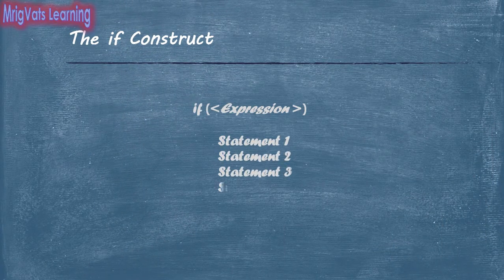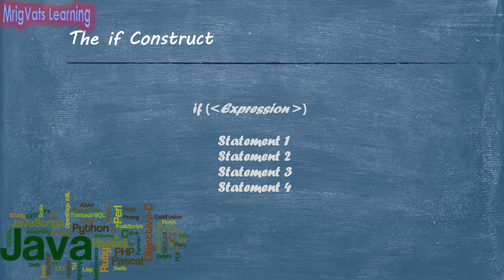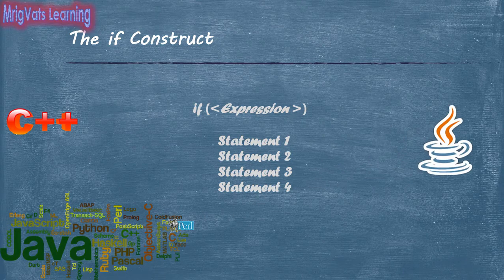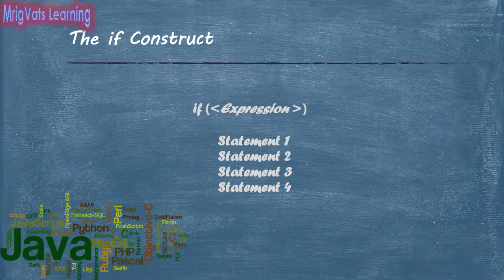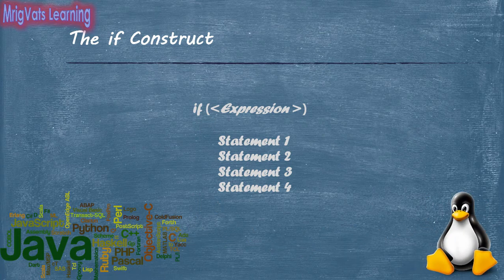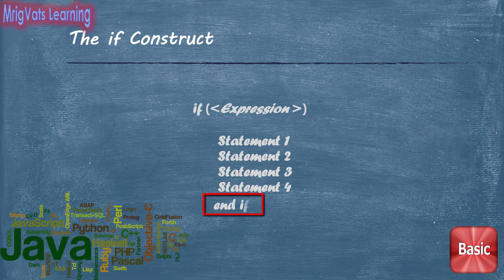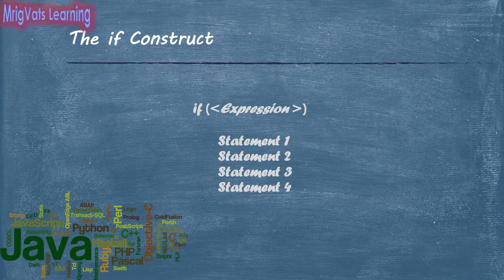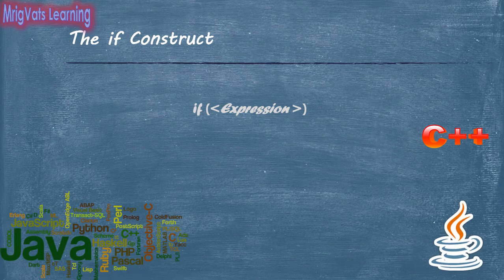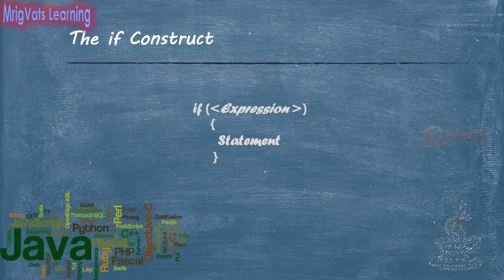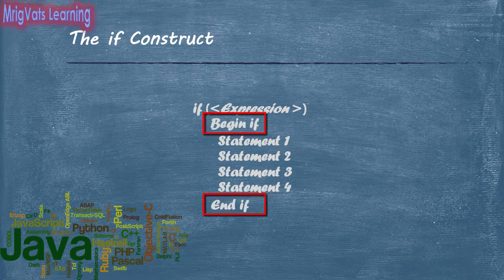The body of the if construct is enclosed within delimiters. Different programming languages have their own conventions to use delimiters for the body of the if construct. For example, in C++, Java, and Perl, you use curly braces as delimiters. In DOS batch files, you use parentheses. In Unix shell scripts, you use a combination of then and fi. In Basic, you use end if. However, in Python, you do not use any delimiters. In many languages like C++ and Java, if you use a single statement in the body, you can choose not to use delimiters, but it's good practice to always use them. In pseudocode, we will use begin if and end if as delimiters for the body of the if construct.